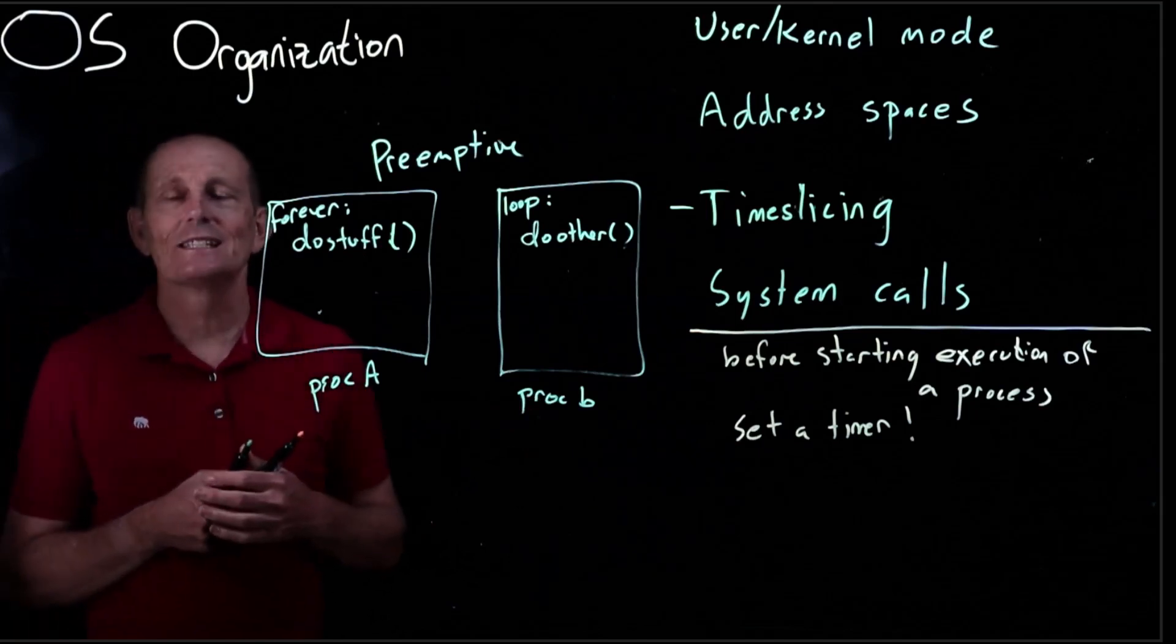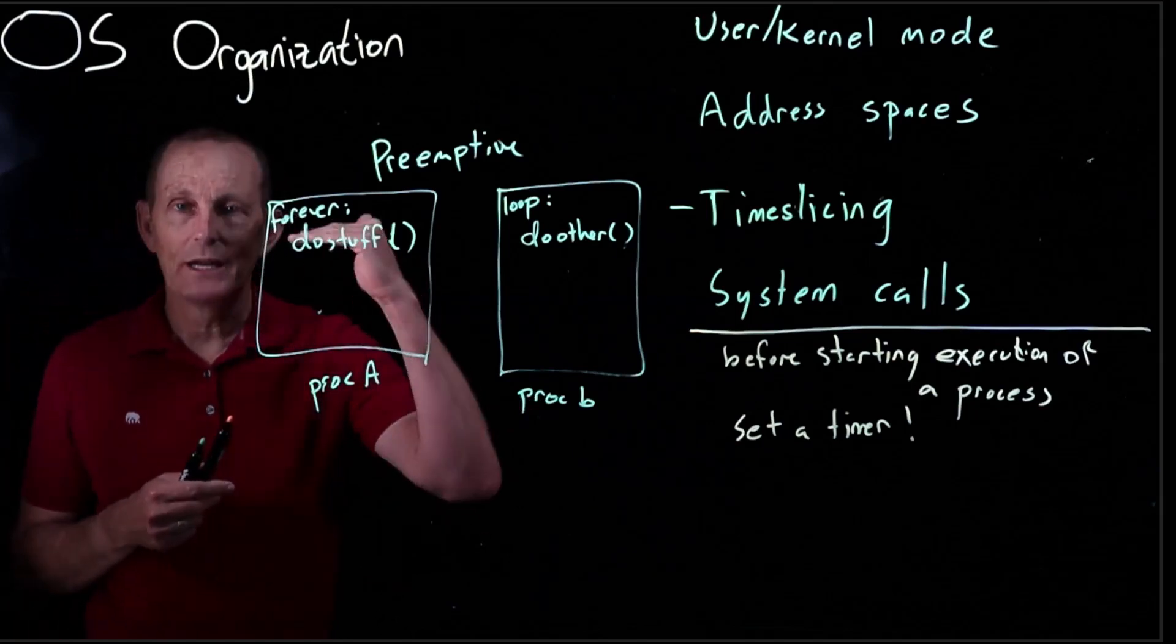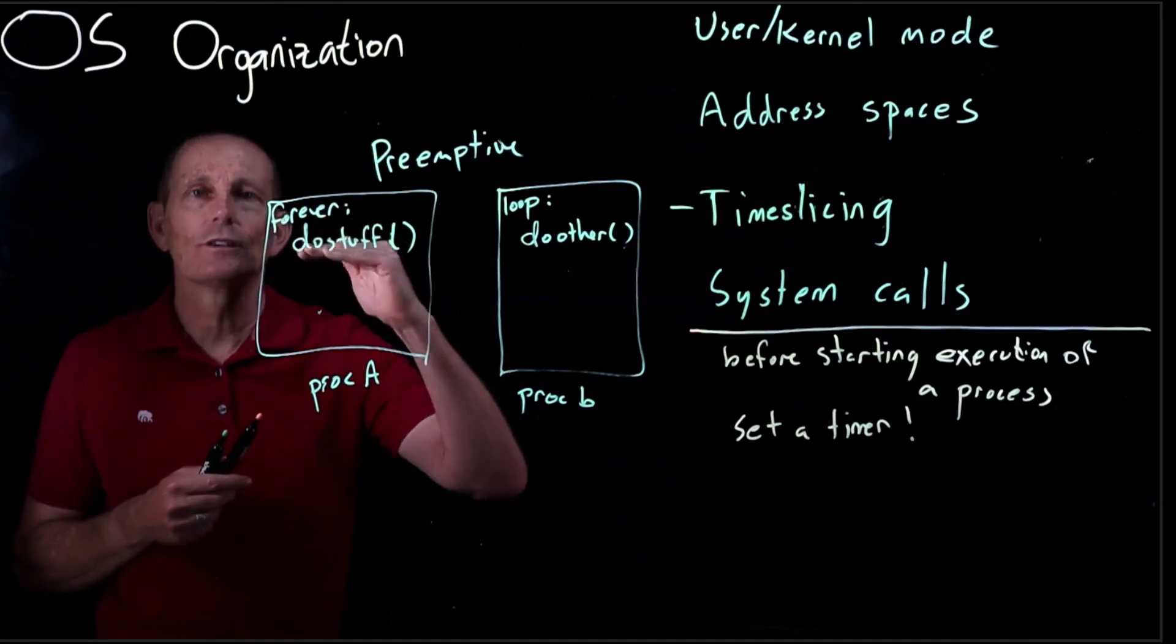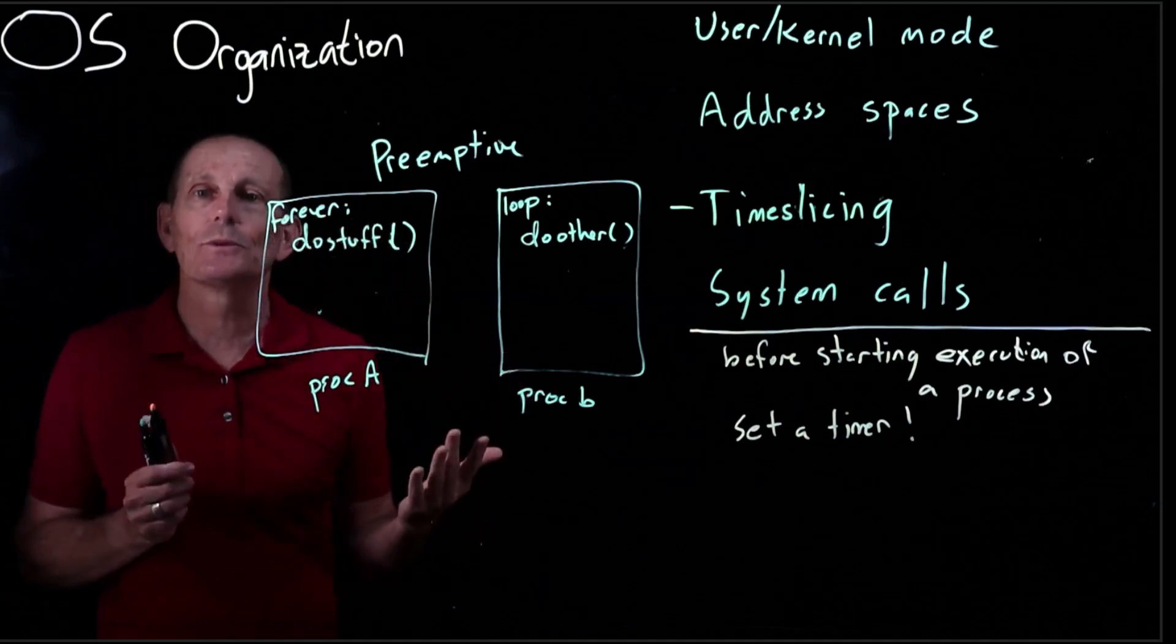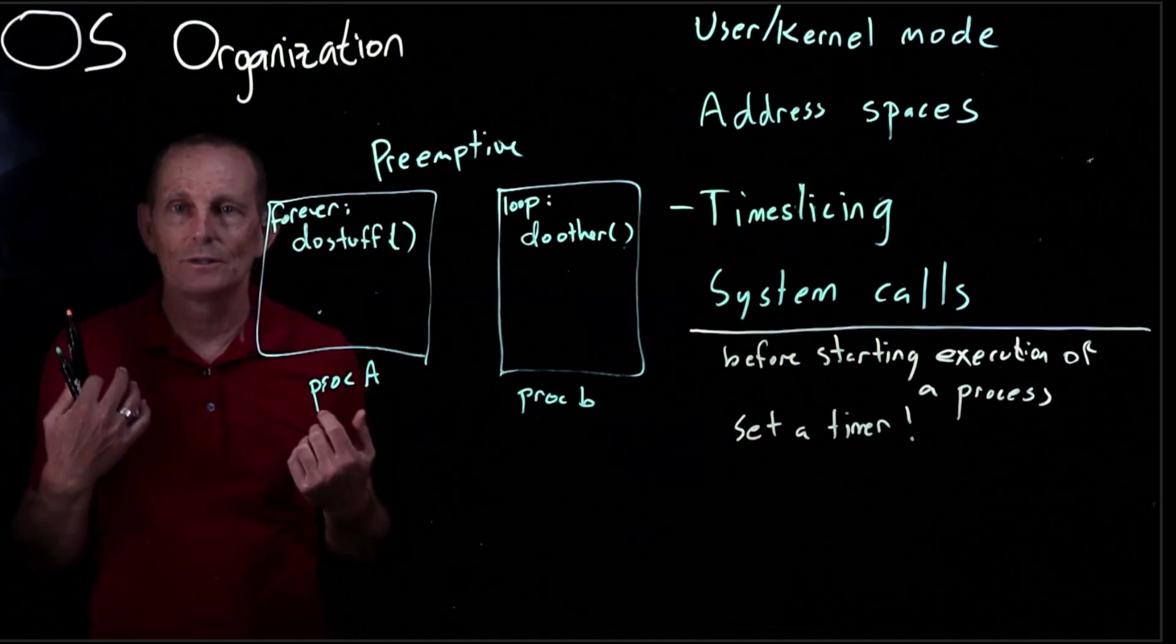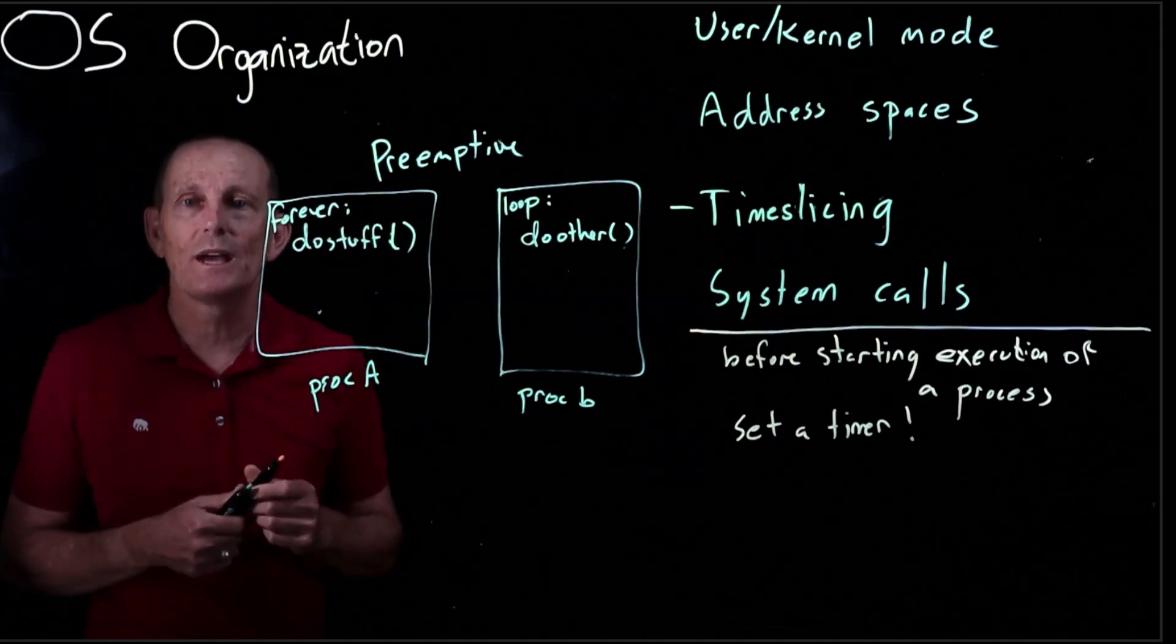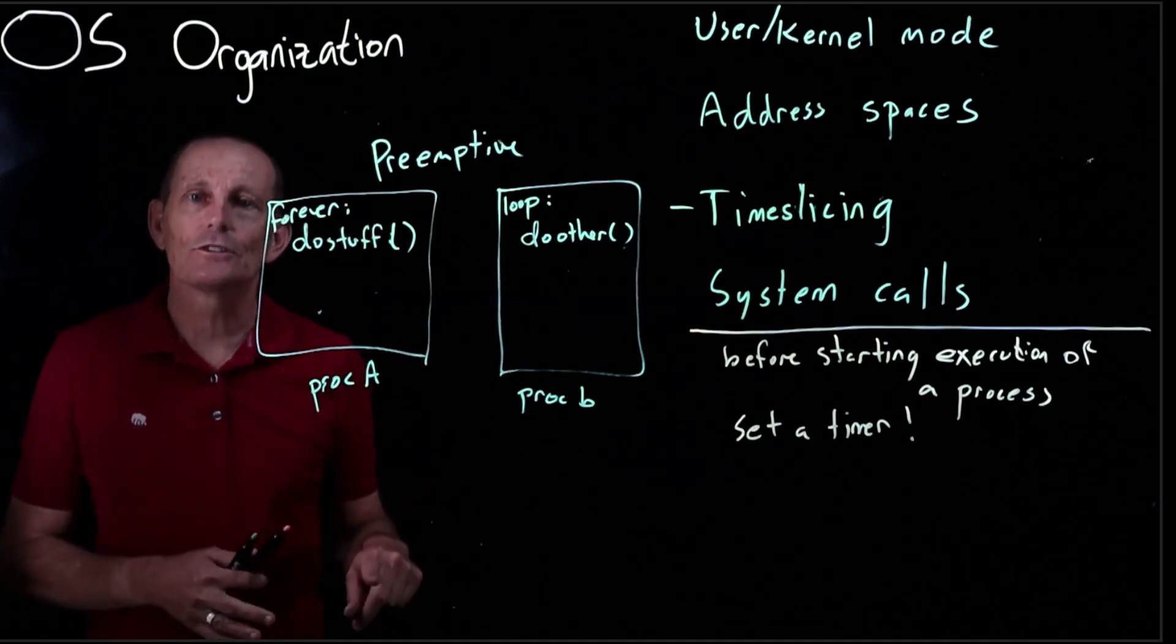However if the 10 milliseconds elapses we're still running process A user instructions all of a sudden the timer goes off. What happens when a timer goes off? We get an interrupt. Who gets control when an interrupt happens? The kernel gets control.